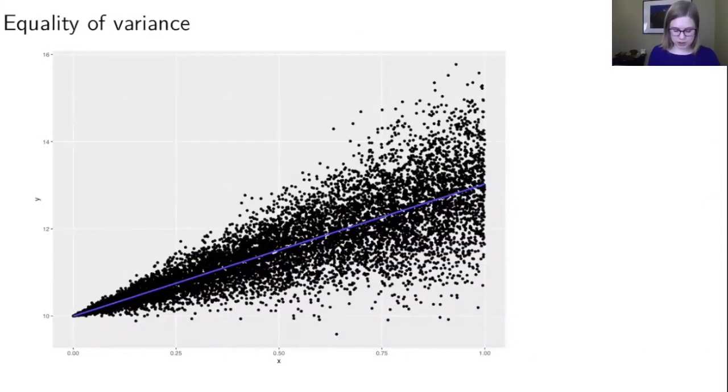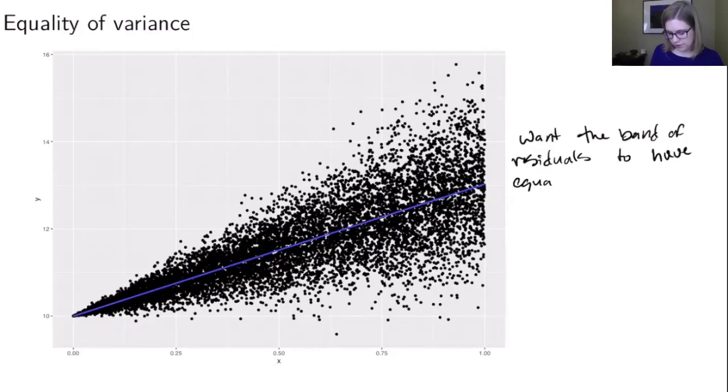And then the last condition is equality of variance. And this is one that I am going to have you think about. So when you think about equality of variance, you're again going to look at the plot. And you want to make sure you want the band of residuals to have equality of variance. And this plot, again, is a violation.